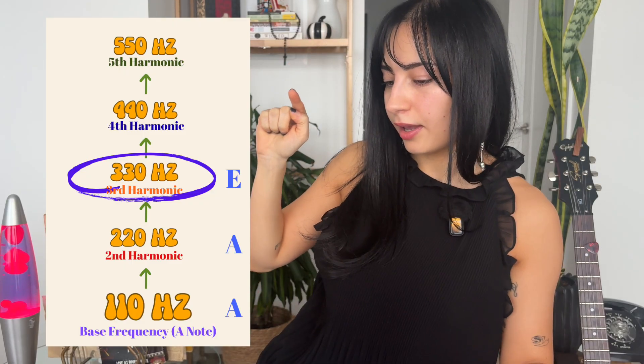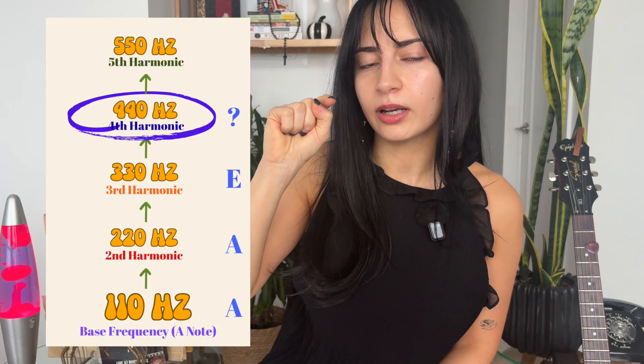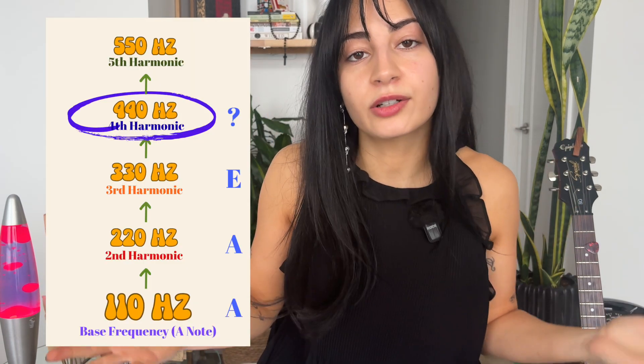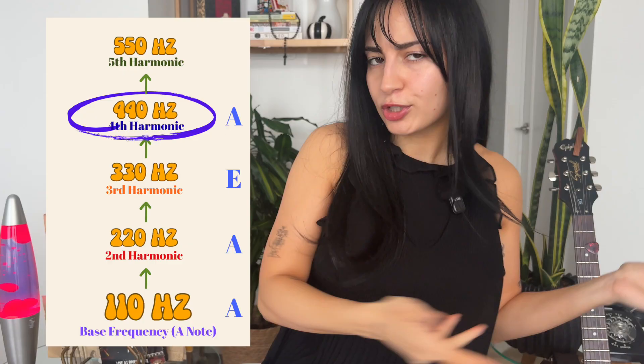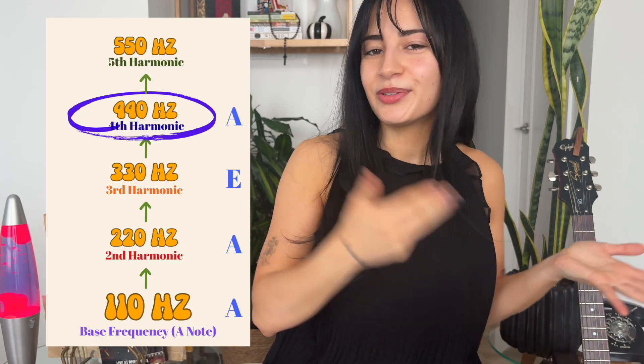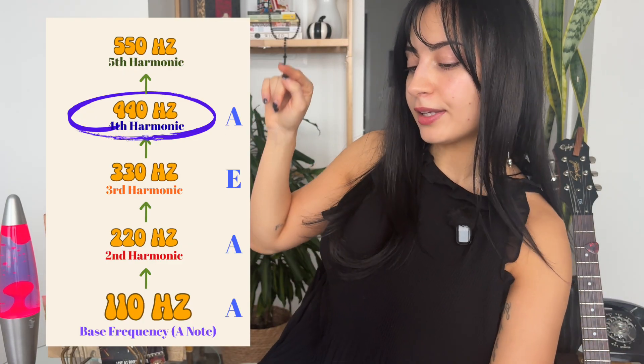Now the fourth harmonic has a hertz of 440. What note has a hertz of 440? It's the A note — we just covered that. So the pattern so far goes: A, A, E, A.